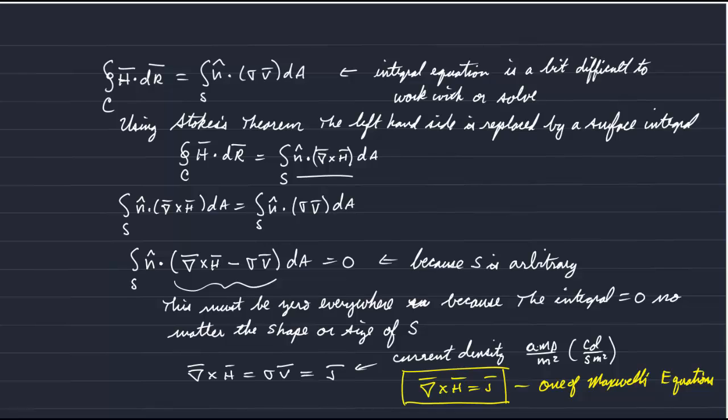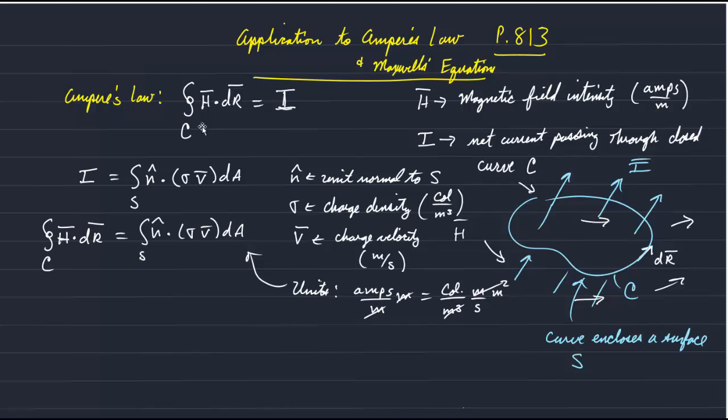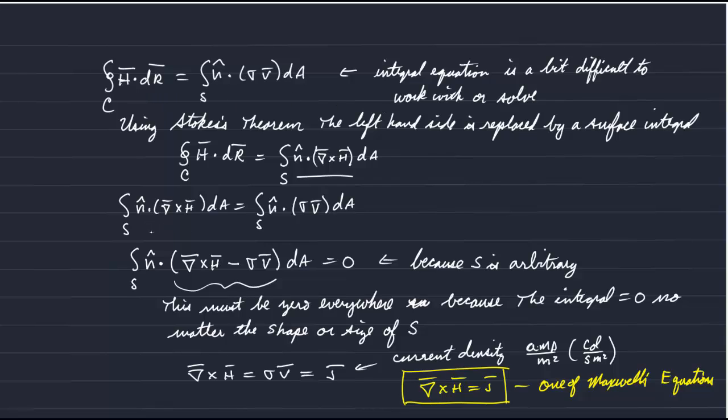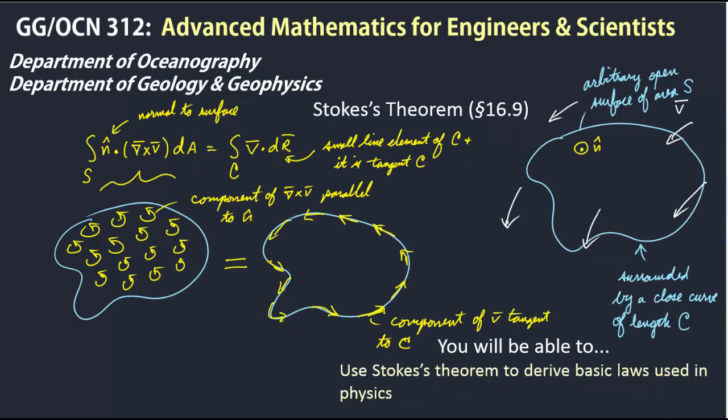So Stokes's theorem was valuable in that we started with Ampere's law, which was an integral of the magnetic field intensity around a closed surface. By using Stokes's law, we were able to cast both the left and right hand side of Ampere's law as a surface integral. And in so doing, because of the arbitrariness of our surface, we could eliminate the integral all together, knowing that the curl of the magnetic field intensity is equal to the current density at every point. And this gives a differential equation that's much easier to work with than these integral equations. And it's a very important one in basic physics of electricity and magnetism. Okay, so that was an application of Stokes's theorem.